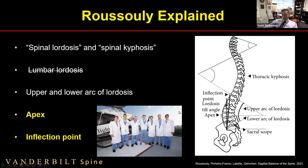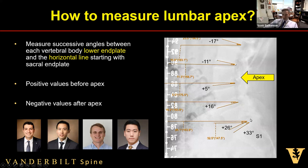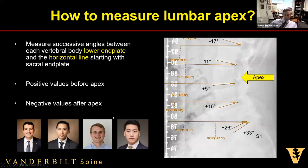To measure the lumbar apex systematically, start at S1 and measure each lower end plate: L5, L4, and so on upward. When the numbers transition from positive to negative, that's the apex. To measure the inflection point, you do the same thing — as you march upward, eventually numbers get less negative and start to increase again. After values have decreased for two consecutive vertebrae, the first of those is the inflection point.